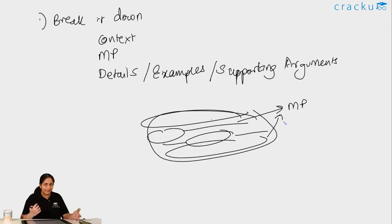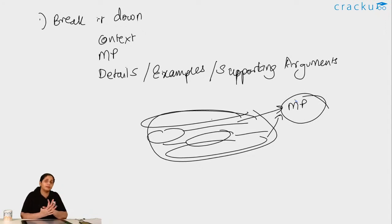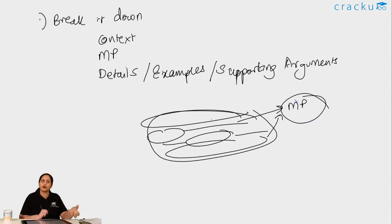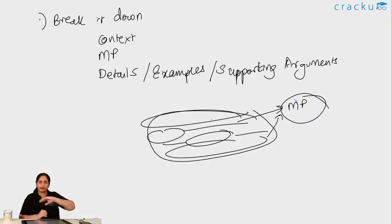At times the main point might not be directly given in the paragraph — you are just given details and supporting arguments, and you have to actually infer or conclude the main point. In all cases, just remember that you have to go after the main point. The summary should include the main point or main points — there can be multiple. For example, if you make two arguments about something, both should be in the para-summary. Just remember: put in the main points, and edit away all the details, examples, and supporting arguments.